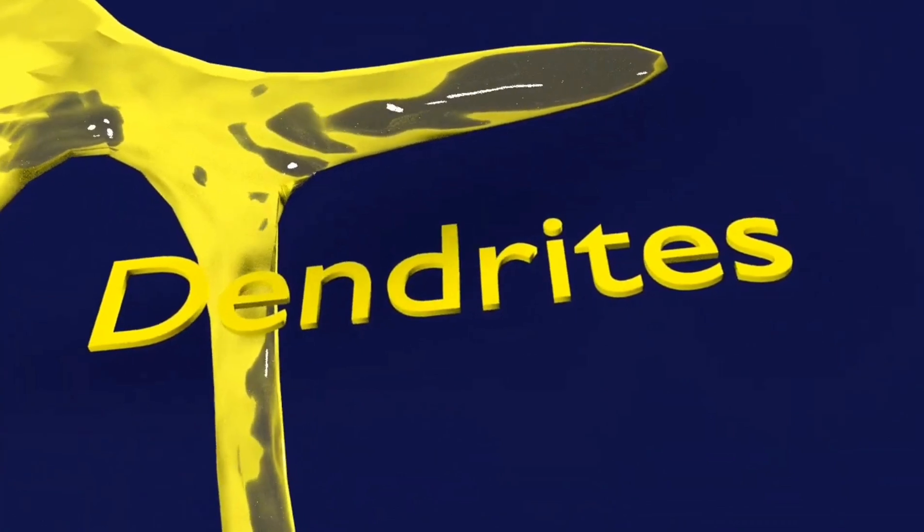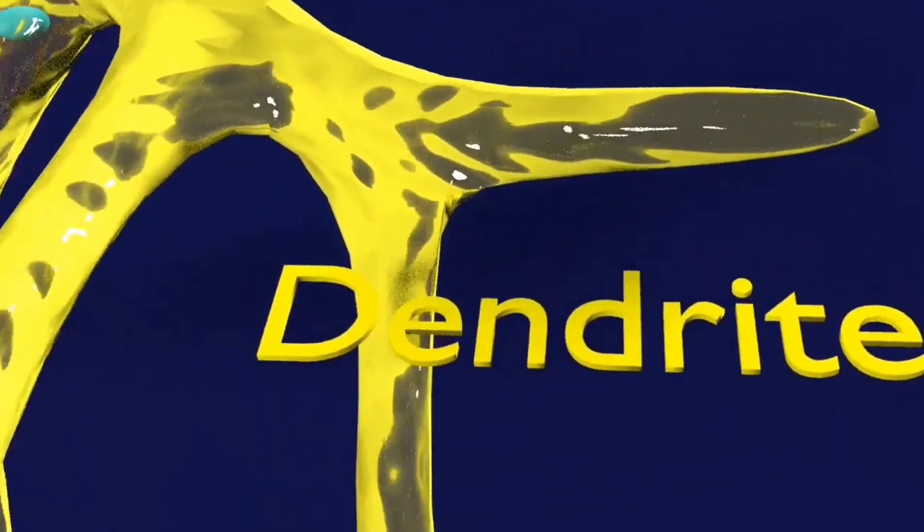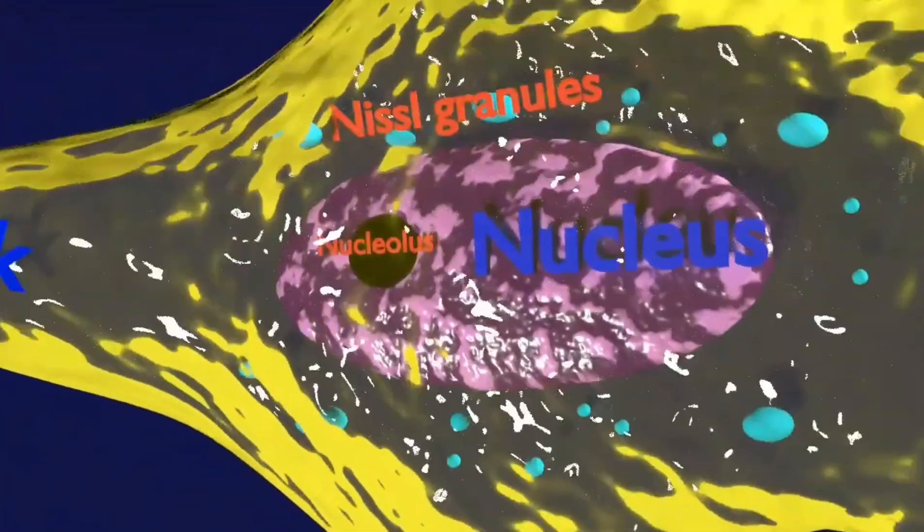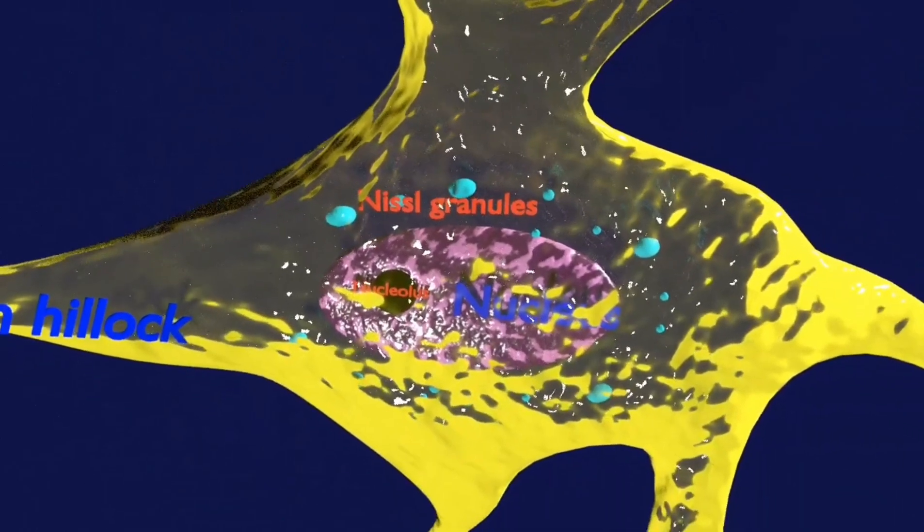The soma of a neuron can vary from 4 to 100 micrometers in diameter. As it contains the nucleus, most protein synthesis is occurring here.